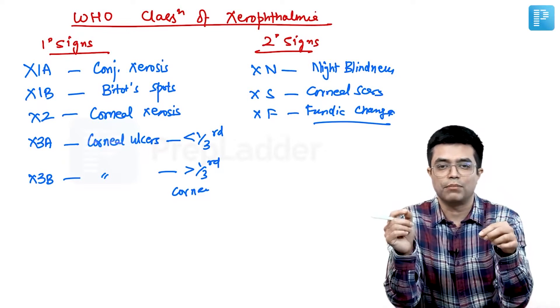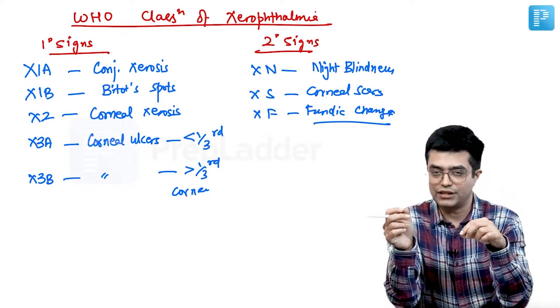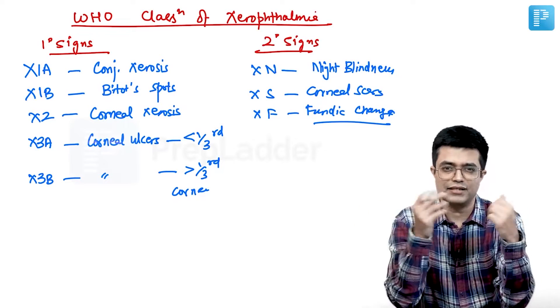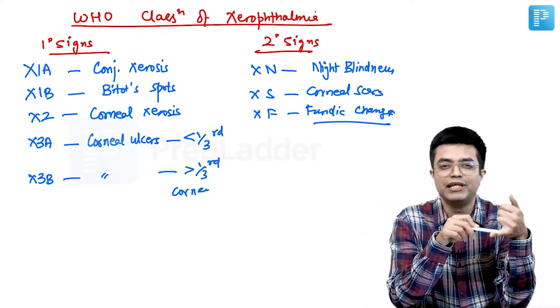What is the first symptom of vitamin A deficiency? The ocular eye related symptom. The answer will be night blindness.